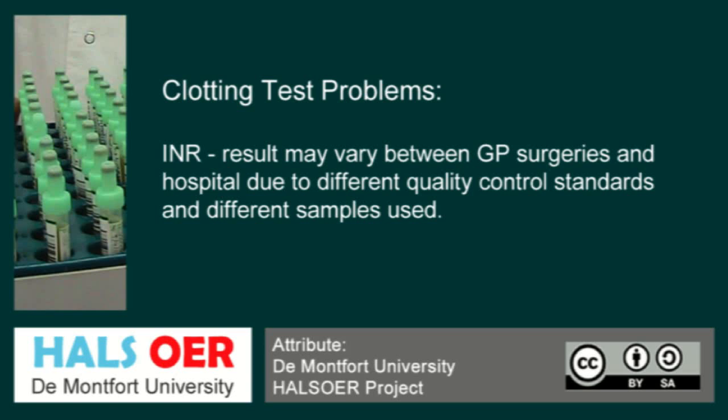One of the problems we encounter is with GP surgeries — they may perform an INR and get a result of 2 or 3, but when they send it to the hospital here, we may find the actual sample has an elevated INR and they can't understand why. Our analyzers are very well maintained because of the QC materials we perform regularly, with a QC run every 2 to 3 hours. Our technology is very different from what GPs use, which are endpoint detectors using whole blood. We use plasma, which is much more accurate and doesn't get affected by human variables at all.